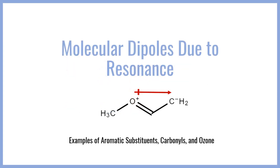Hey everyone, welcome to BCP Med. In this video we're going to be taking a look at how molecular dipoles can arise from the resonance structures associated with a molecule. Specifically, we're going to be looking at how donor heteroatoms like oxygen and nitrogen can lead to charged resonance structures and unique molecular dipoles. Let's go ahead and get started.